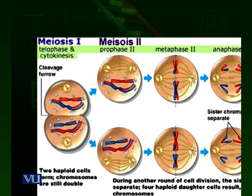In prophase II, the chromosomes appear and become visible under the microscope because of condensation — they are thickened. The centrioles start moving towards the poles in animal cells and begin making the spindle fibers. At the end of prophase II, the nuclear membrane disappears and the chromosomes and spindle fibers are in place in the center.